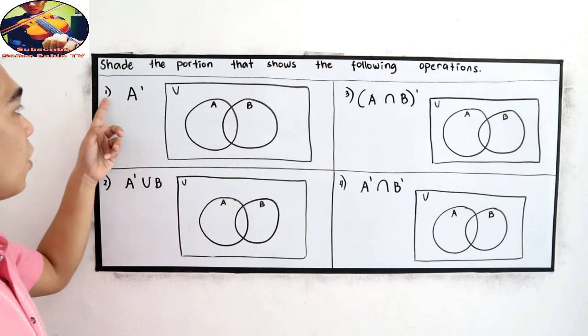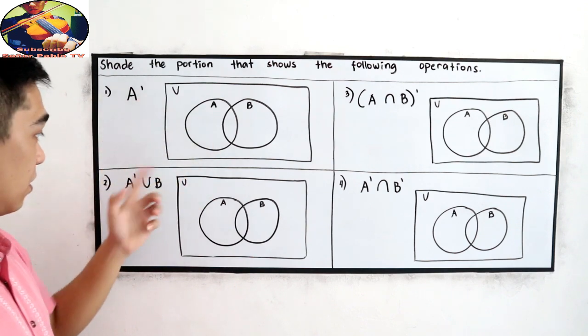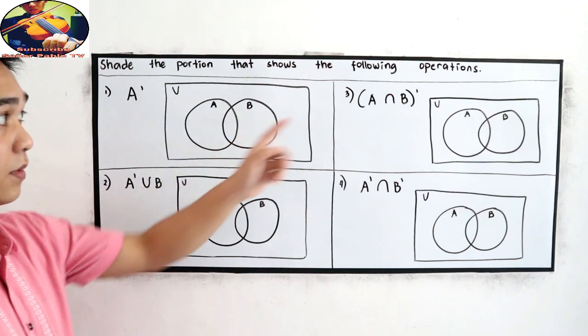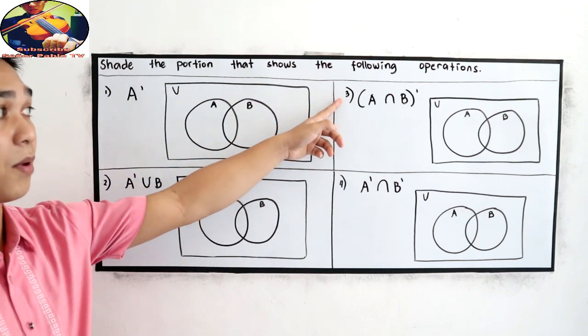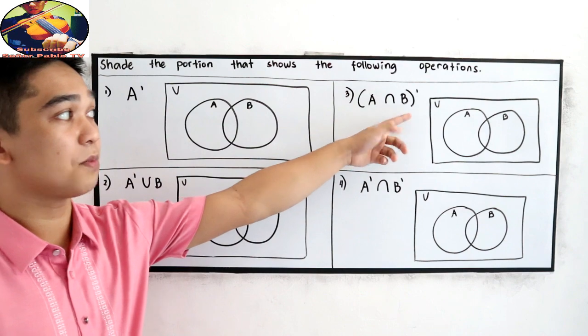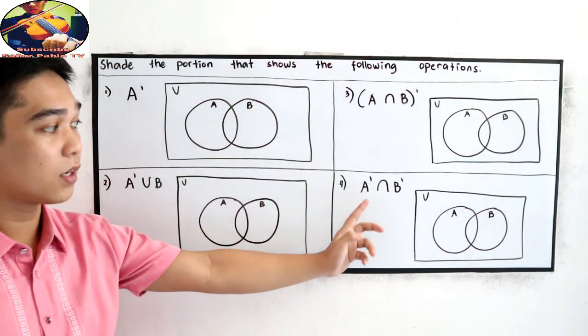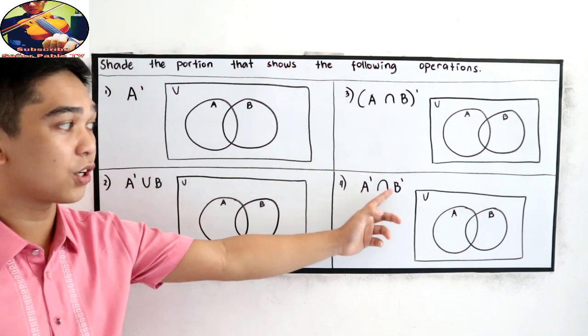Number one, A prime. Two, A prime union B. Number three, A intersection B complement or A prime. Number four, A complement intersection B complement.